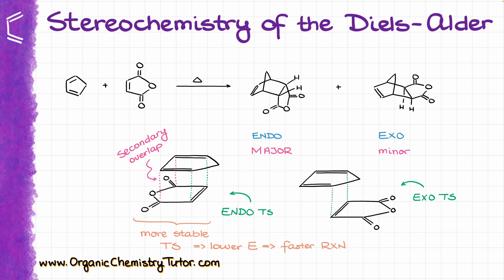This secondary overlap makes the transition state more stable, lowering its energy. And the lower the energy of the transition state, the lower the activation energy of the reaction is going to be, and the faster the process is going to be overall.